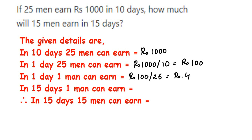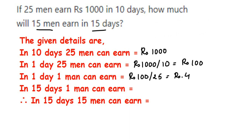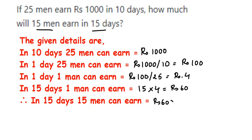So one man on one day earns rupees 4. Now we have to find out for 15 men over 15 days. For one man in 15 days, he earns 15 multiplied by 4, which equals rupees 60. Since there are 15 men, we multiply again by 15, so it will be rupees 60 multiplied by 15, which equals rupees 900.